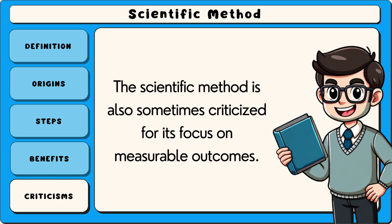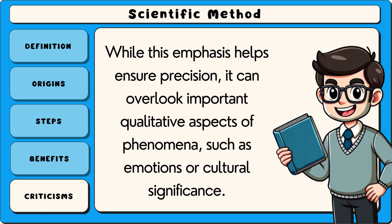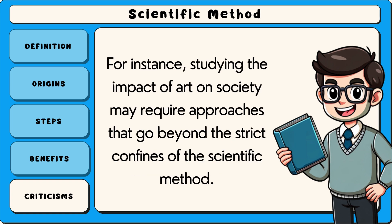The scientific method is also sometimes criticised for its focus on measurable outcomes. While this emphasis helps ensure precision, it can overlook important qualitative aspects of phenomena, such as emotions or cultural significance. For instance, studying the impact of art on society may require approaches that go beyond the strict confines of the scientific method.